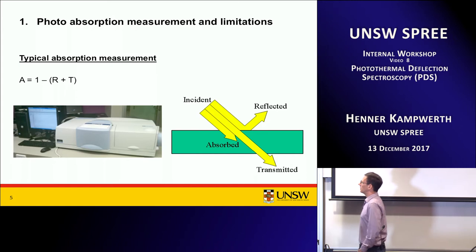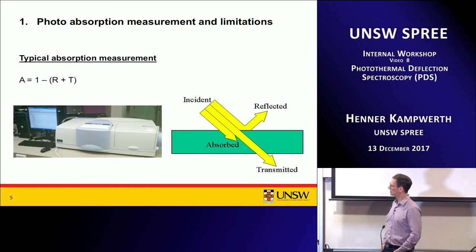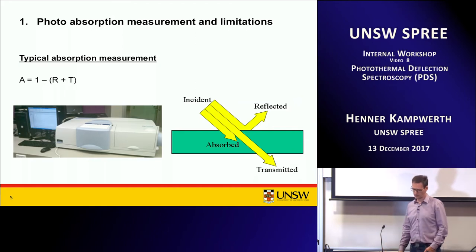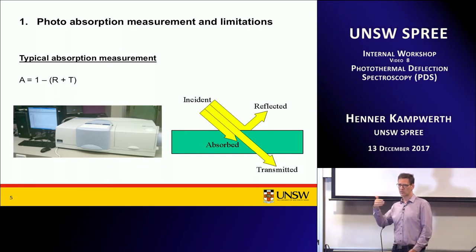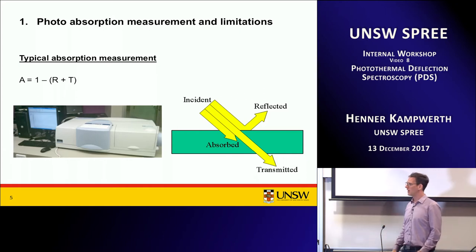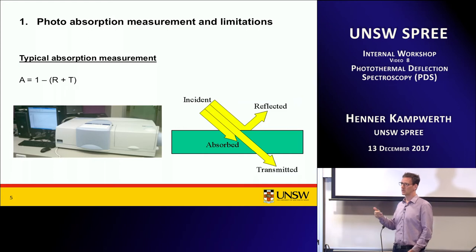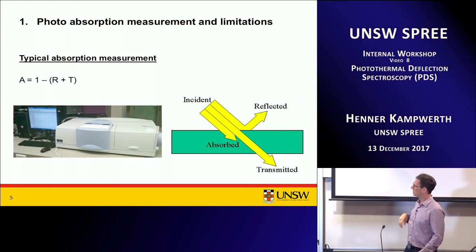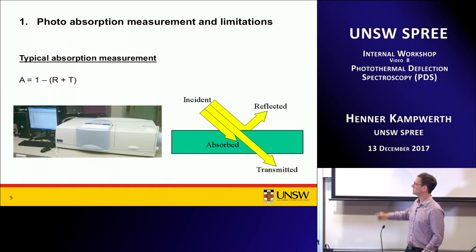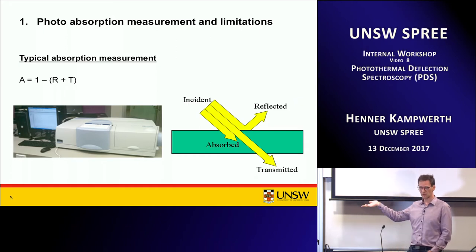Usually we measure absorptance with a reflectance-transmission spectrometer — for example, a Perkin-Elmer, which we have in one of our main characterization rooms. It has a monochromatic light source that shines on the material, measures how much is reflected and how much is transmitted, and the difference between the incident light and the reflected and transmitted is the photons that got stuck in the material — the absorbed amount. So absorptance equals one minus reflectance minus transmission.